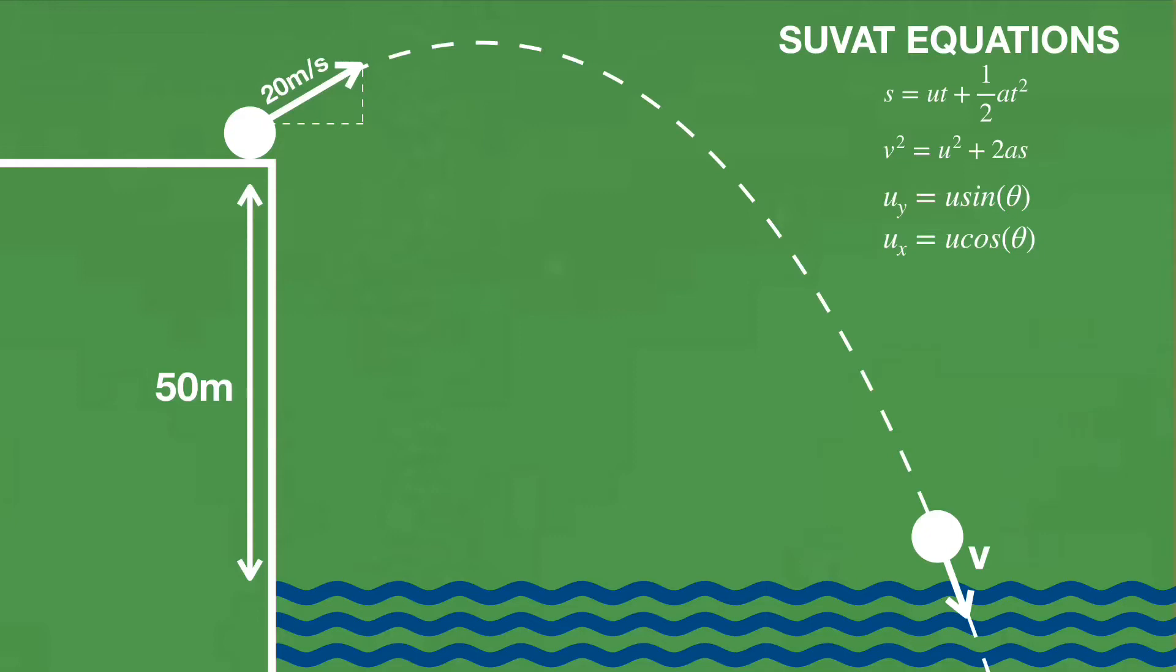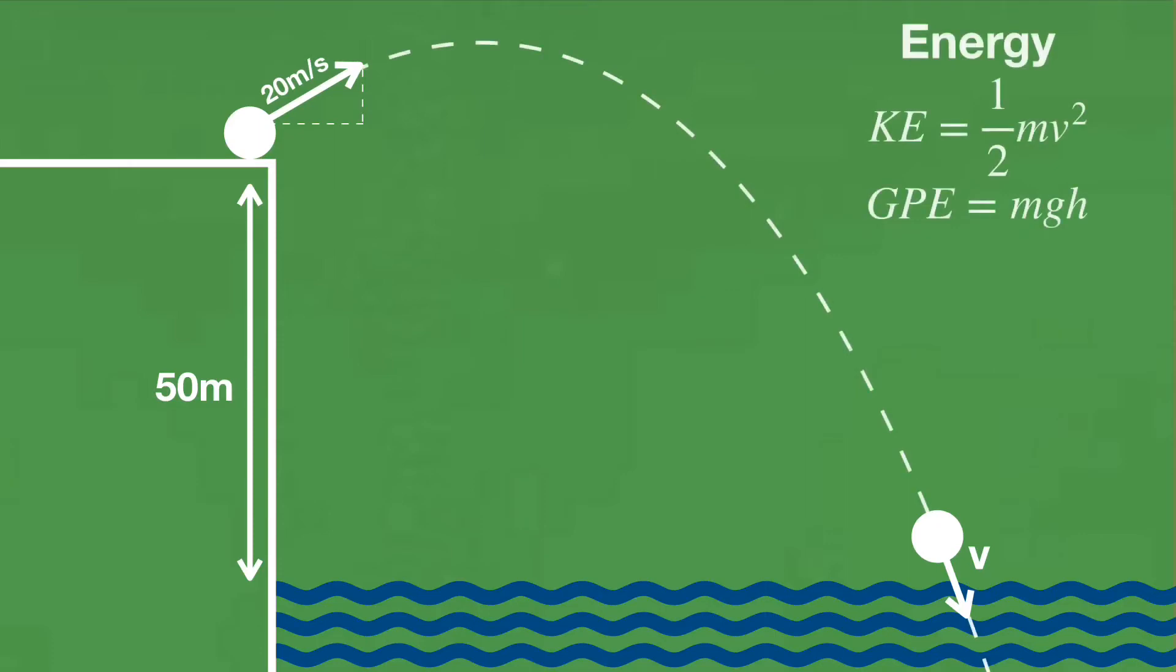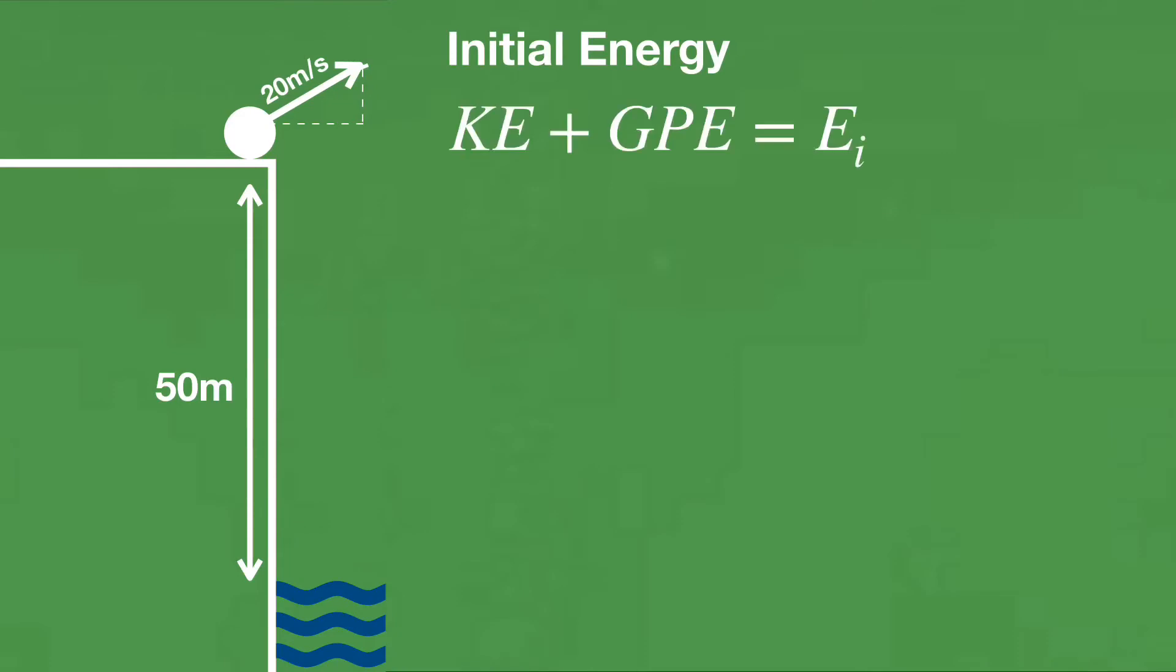The only two kinds of energy necessary are kinetic and gravitational potential energy. Initially the ball has kinetic energy from its velocity, but it also has potential energy from its height on the cliff. We can then substitute the values that we have to find initial energy, assuming that gravity is 10 meters per second squared for simplicity. We don't have a value for mass, but this is okay because it's going to drop out later.